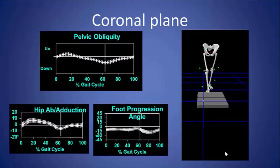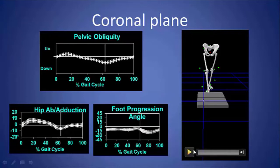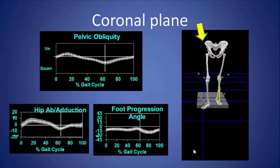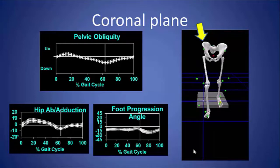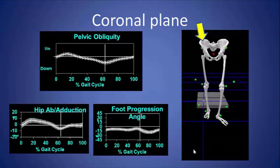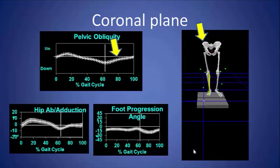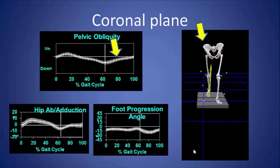Here is the reconstructed skeleton where you can see the pelvic motion a little more clearly. With landing and through stance phase the pelvis is down a bit, and then it goes up during swing phase to help the swing phase limb clear — and that's what you see on this graph.